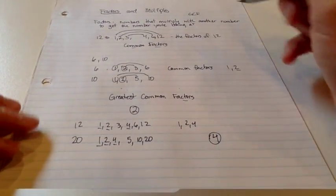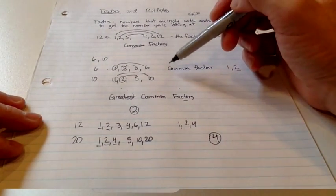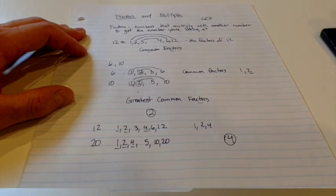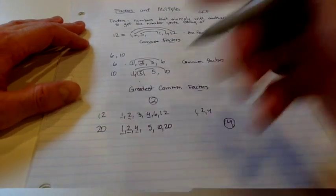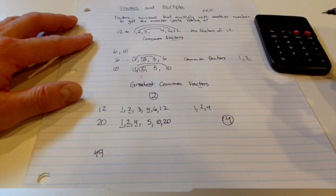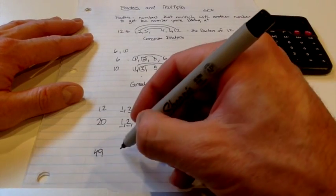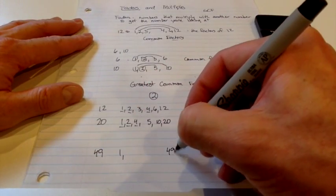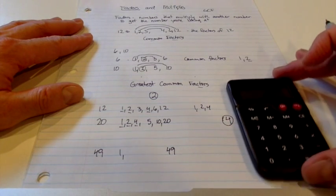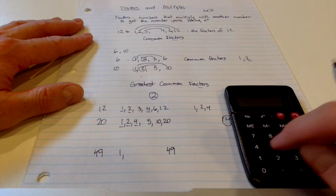So that's bringing us through factors, common factors, and greatest common factors. One thing to keep in mind when you're figuring out what the factors are. Sometimes we get really large numbers, like 49. And that's not an easy one to figure out all the factors for. So you could do 1, 49, and then maybe you're stuck. Well, at that point, bring out your handy calculator and start using it.